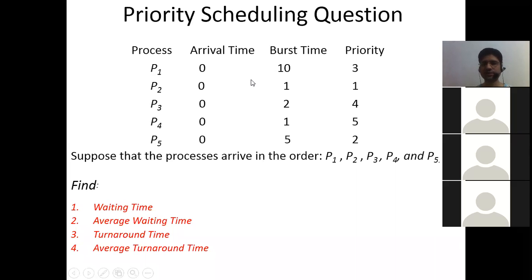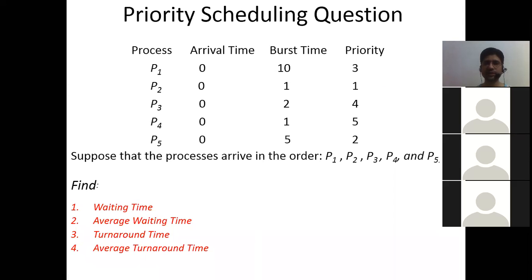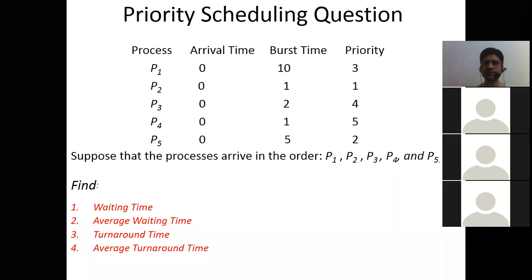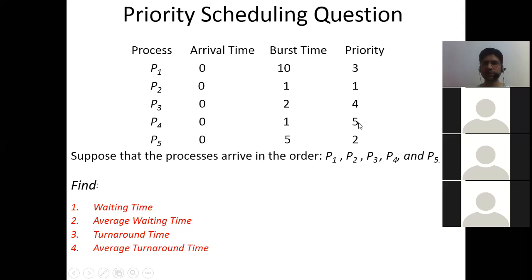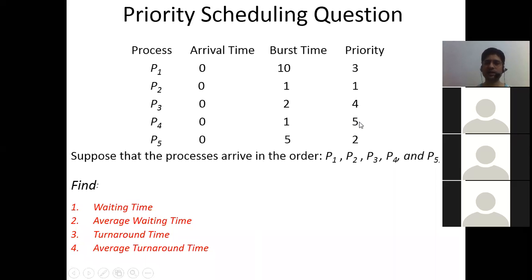To design the Gantt chart, look at the priority column to find the highest priority process, then check the burst time to determine how long to allocate in the chart. P2 goes first with burst time 1, then P5 with burst time 5, then P1 with burst time 10, then P3 with burst time 2, then P4 with burst time 1.